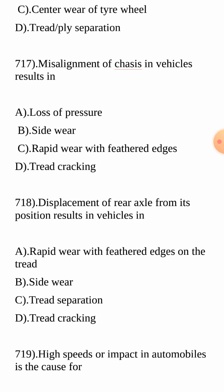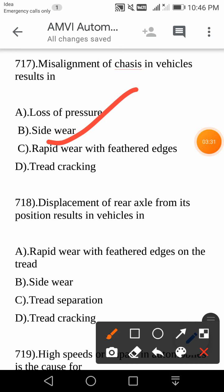Next question: misalignment of chassis in vehicles results in — chassis is a very important element of any vehicle. Misalignment of chassis in vehicles results in rapid wear with feathered edges on the tread. We have seen earlier that incorrect wheel alignment also causes rapid wear with feathered edges, and similarly, misalignment of chassis also causes rapid wear with feathered edges.